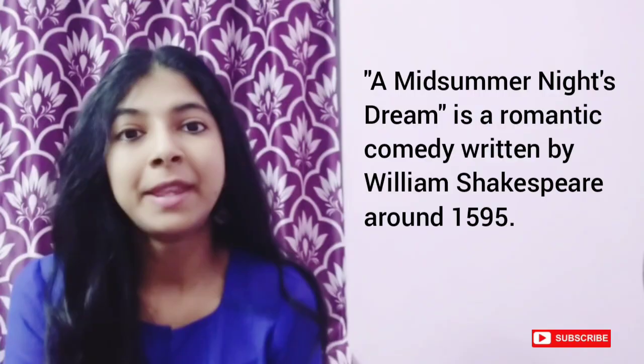A Midsummer Night's Dream is a romantic comedy written by William Shakespeare around 1595. It has fun, laughter and love. It also has magic, fairies and dreams. The play is set in two places: number one in Athens, and number two in a forest outside Athens.